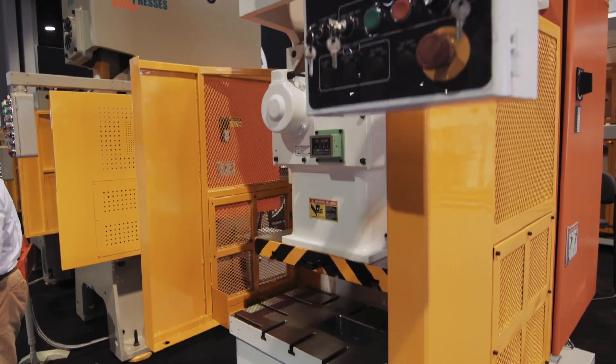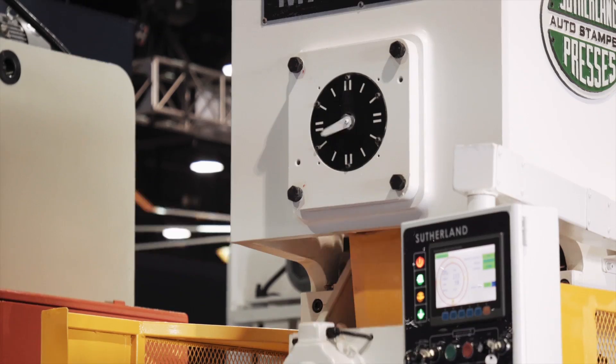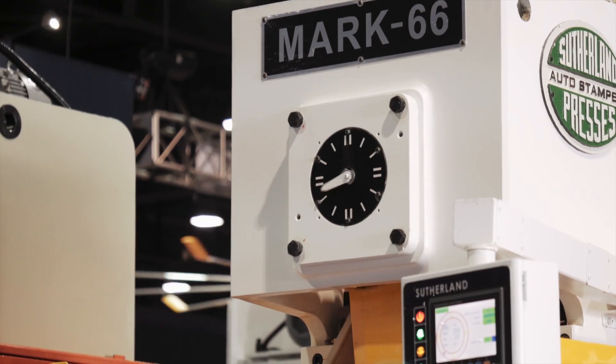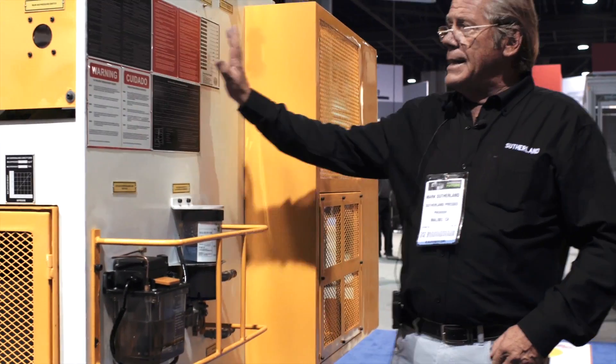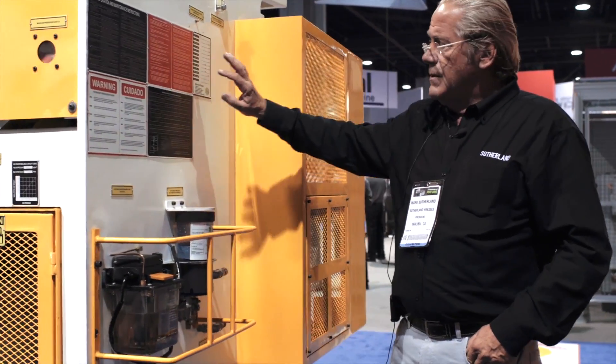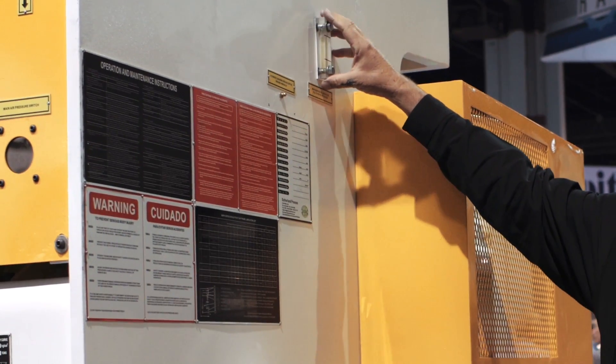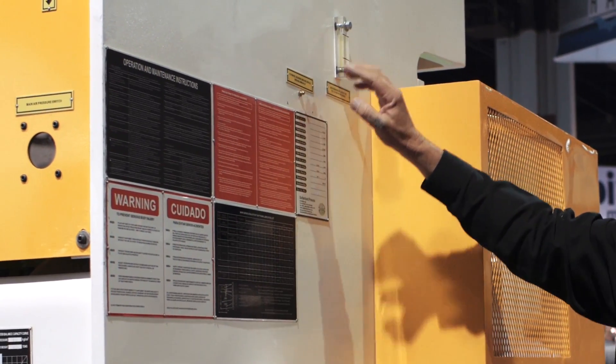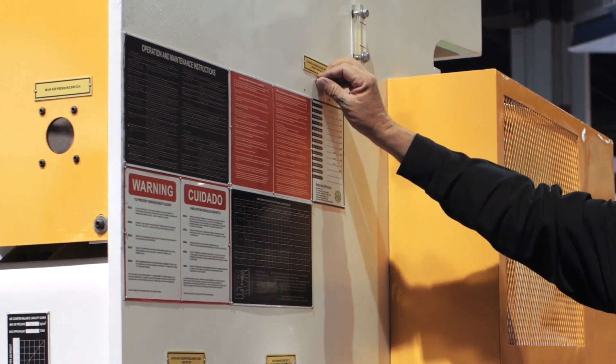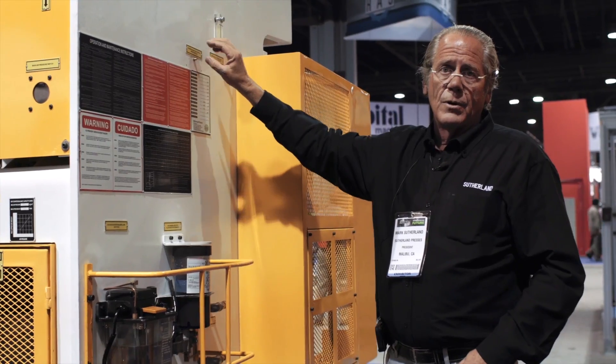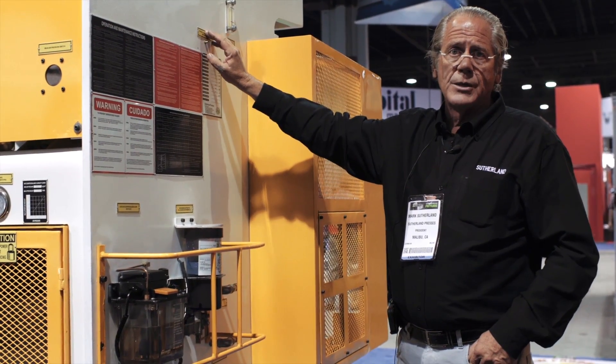And then around on the other side of the press is our ID and warning plates, obviously. Our main gear bath sight level indicator, flywheel brake grease lubrication nipple for lubricating the flywheel bearings once a year.